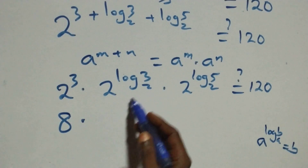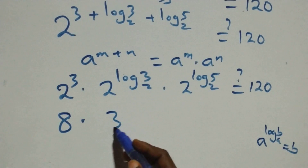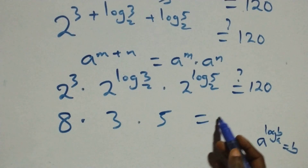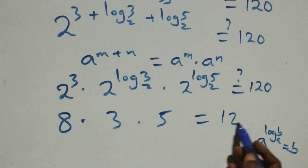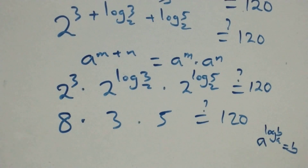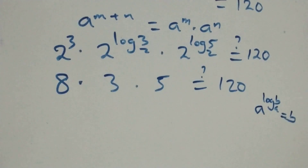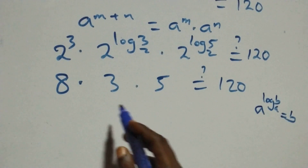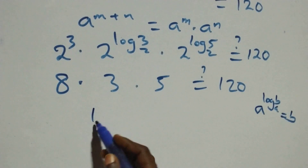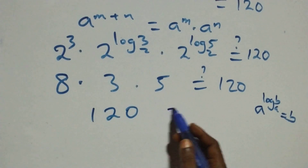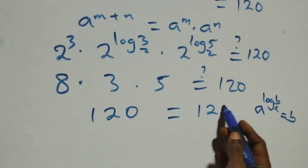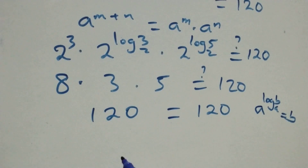This simplifies as: 8 times 3 is 24, and 24 times 5 is 120, which equals 120 on the right-hand side.